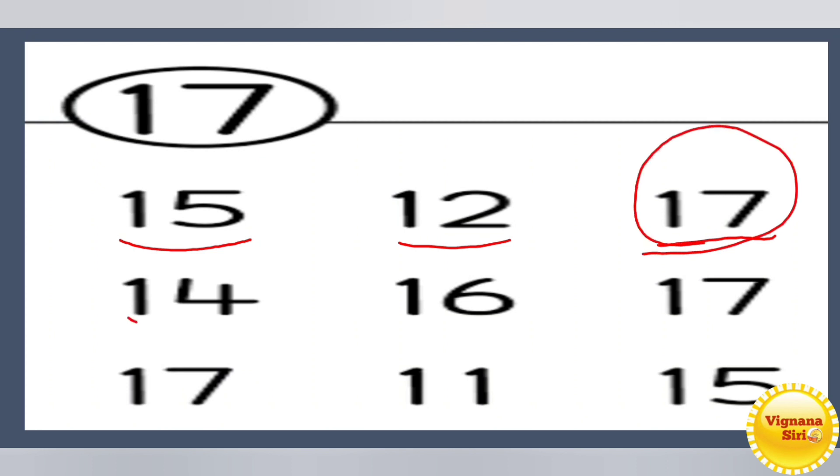You have to tell what is the next one. 14, 16, 17. So we will circle it. 17 again. So circle. 11 and 15. So how many 17s are there? 3.